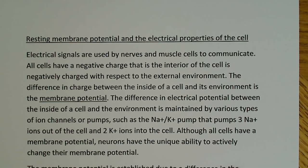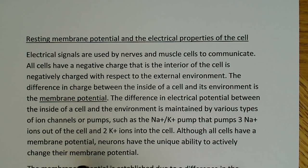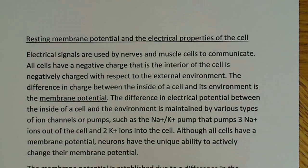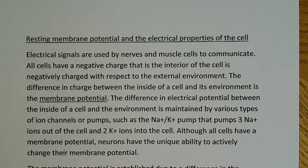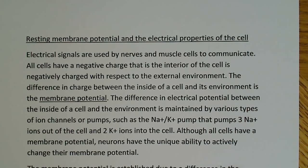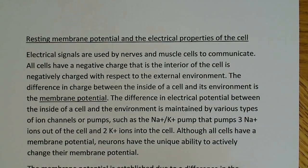Although all cells have a membrane potential, neurons have the unique ability to actively change their membrane potential — that's the big difference. They have the ability to actively change the membrane potential, and that change in membrane potential is what eventually will create things like an action potential. So if you can understand membrane potential and resting membrane potential first, it really sets a good base for discussing the more complicated aspects of signaling between neurons.